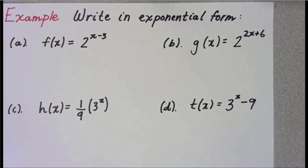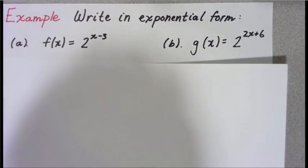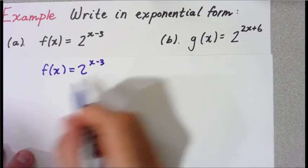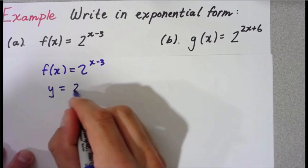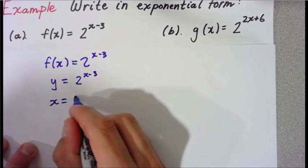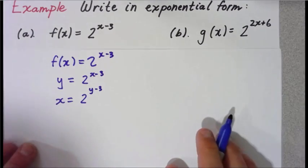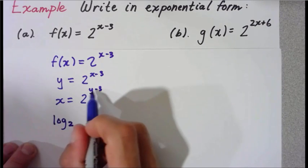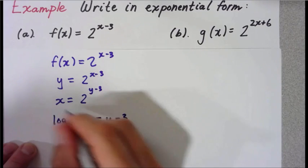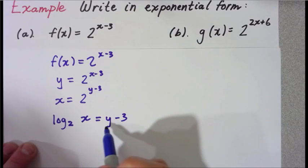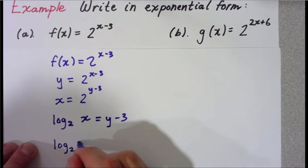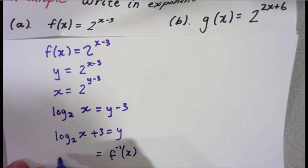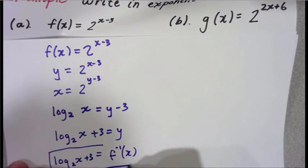Now let's write in exponential form — these are more equation-based examples, a little more challenging. So f of x equals 2 to the x minus 3. When we do this algebraically, we switch f of x with y, giving us y equals 2 to the x minus 3. Now switch x and y. We have to resolve for y, but y is in the exponent, so rewrite in logarithmic form: log base 2 equals y minus 3, and x goes here. Add 3 to both sides — log base 2 of x plus 3 equals y. So f inverse of x equals log base 2 of x plus 3.